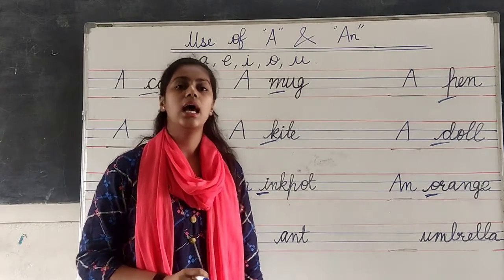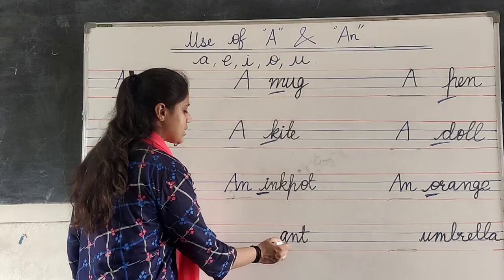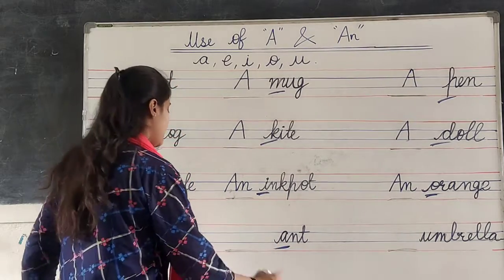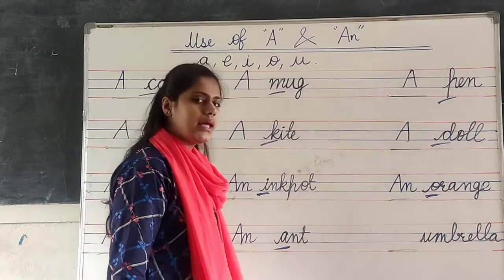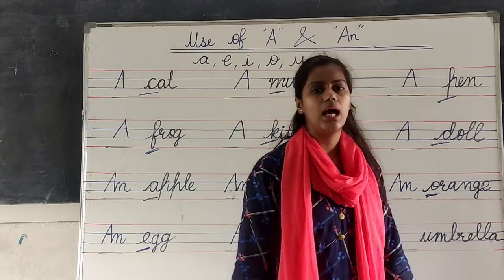Umbrella. An umbrella. What is it? Vowel. Then we have to write A, N. An.